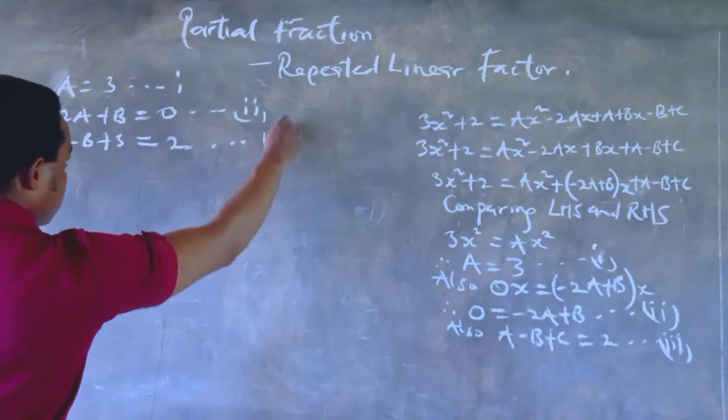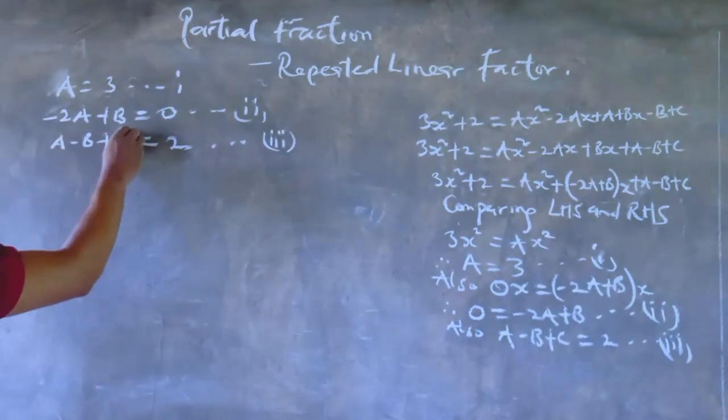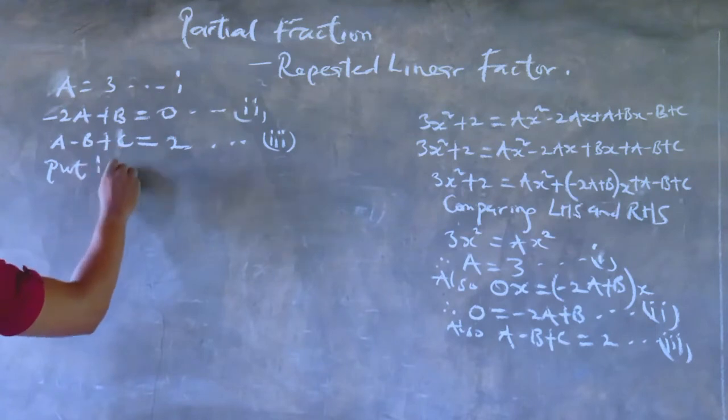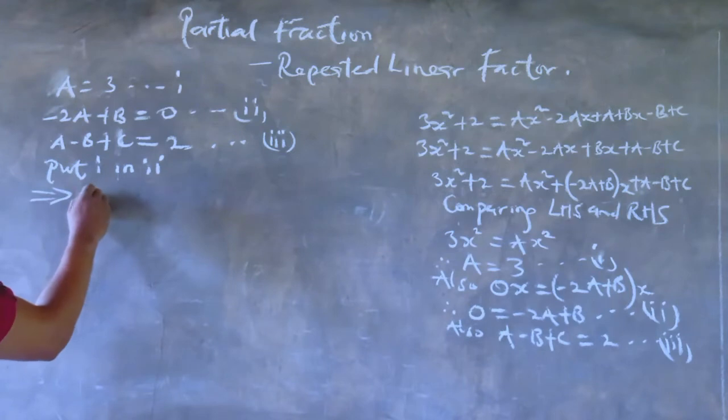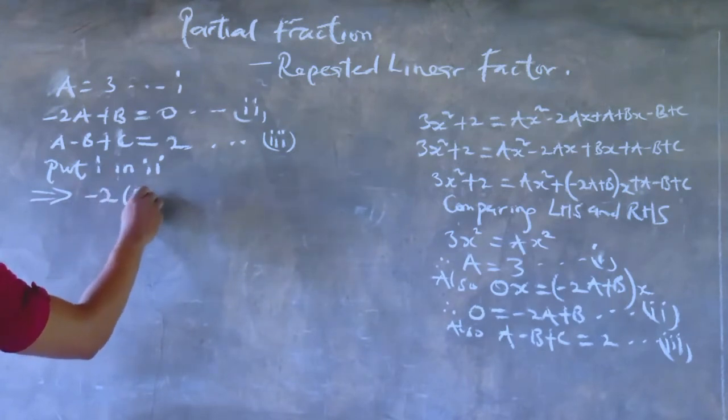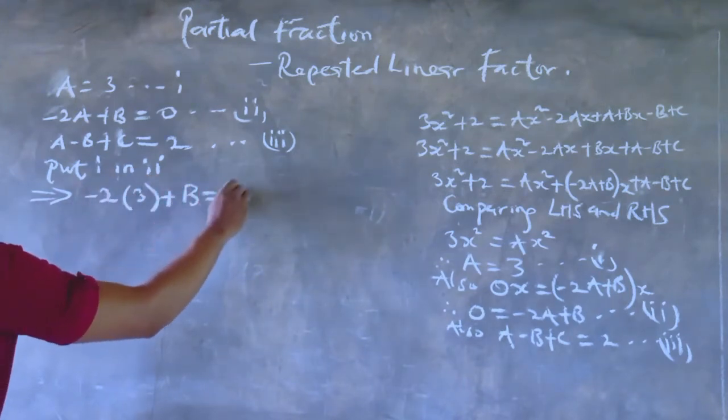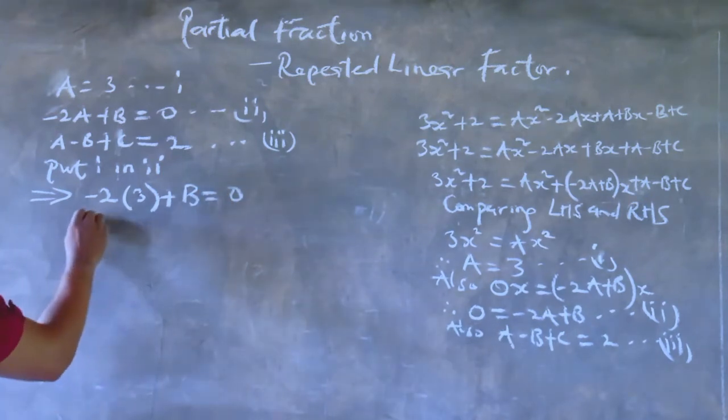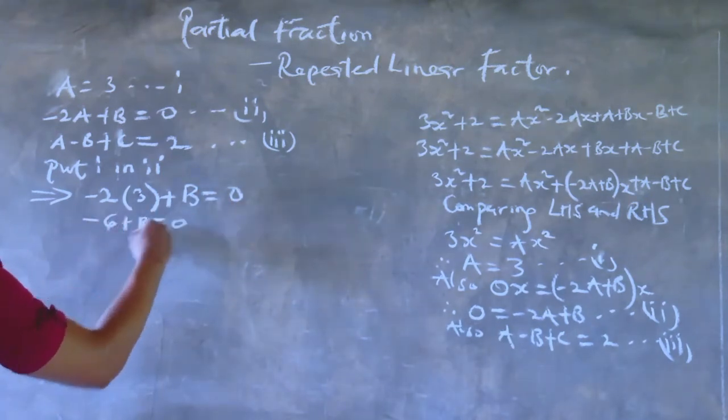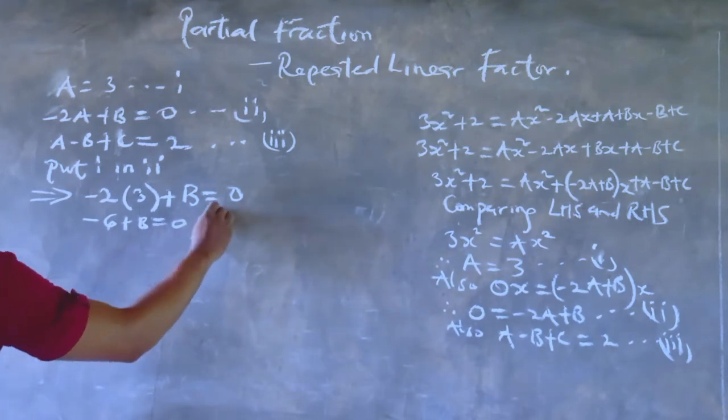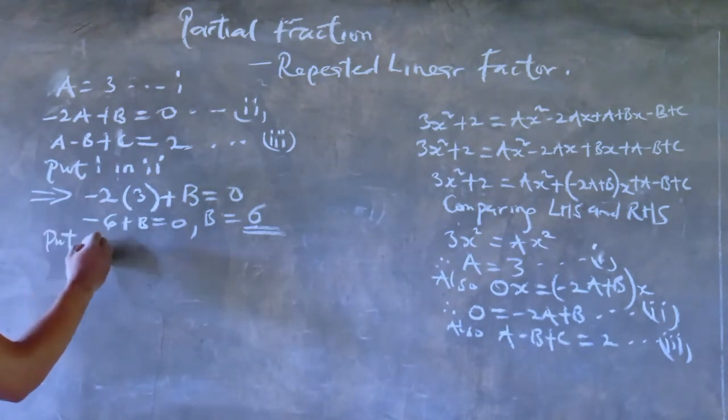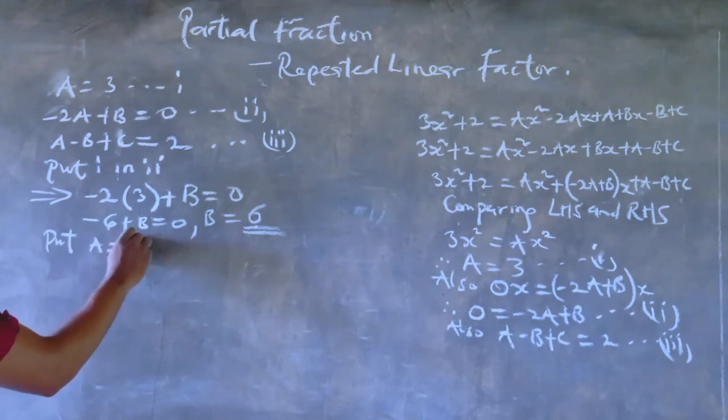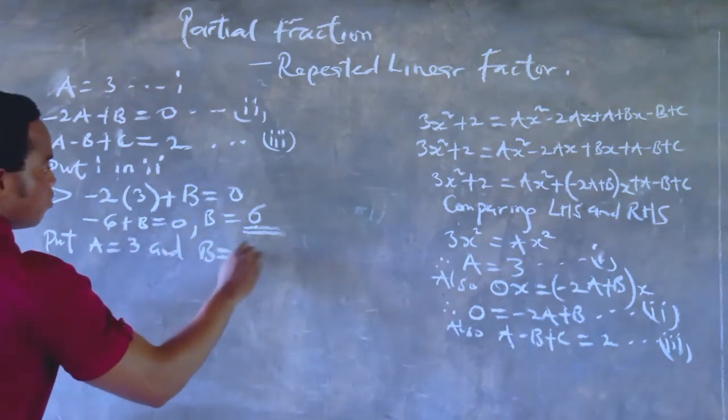And the second equation is -2A plus B equals 0, and the third equation is A minus B plus C equals 2. So let us put A equals 3 in equation 2. So if we do that, we get -2 into 3 plus B equals 0, so -2 times 3 is -6, and plus B equals 0, such that B equals 6.